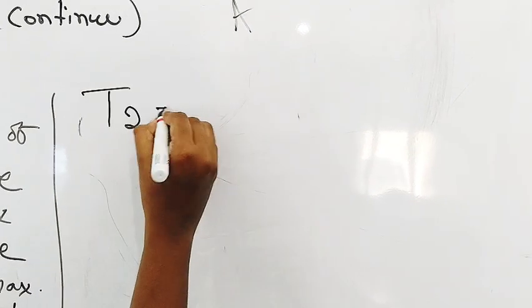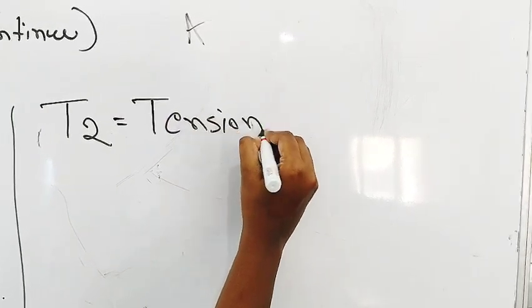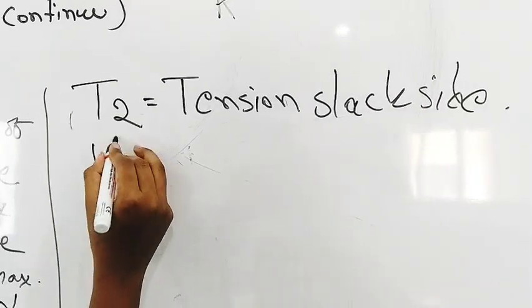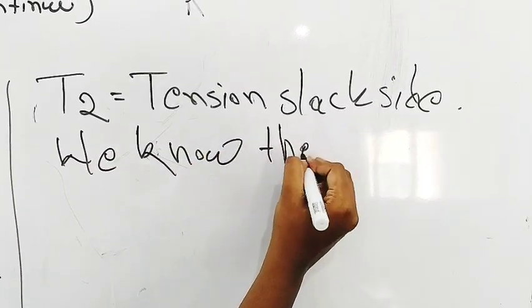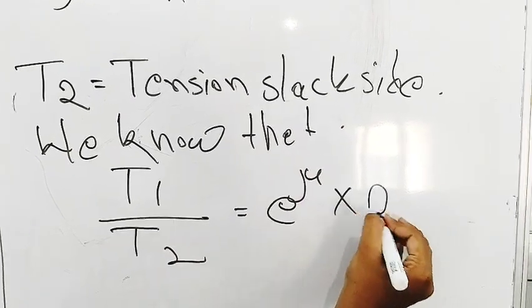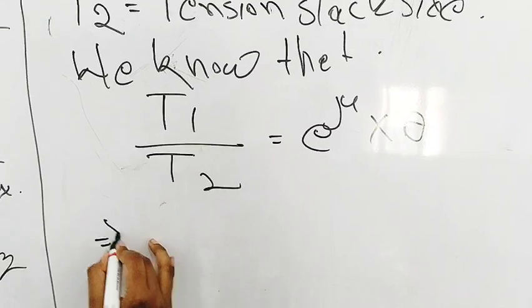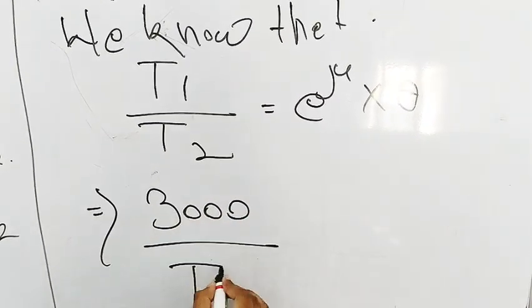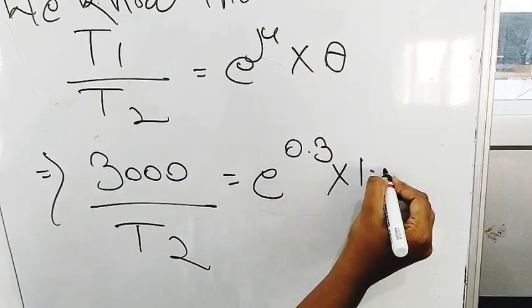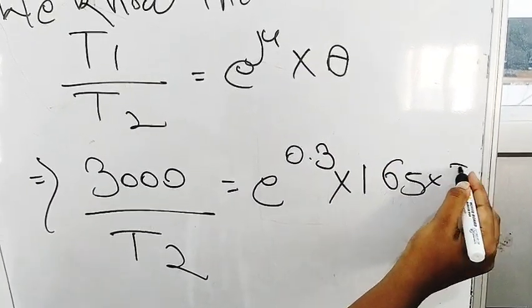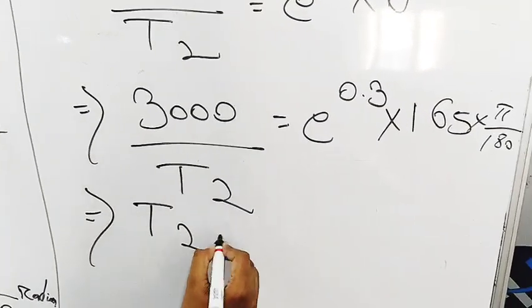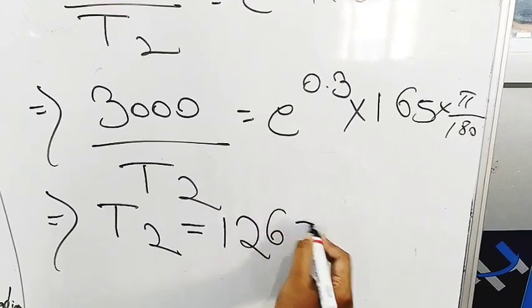Then next one is, then T2 is equal to tension on slack side. So we already know that, we know that T1 divided by T2 is equal to e to the power μ into θ. So T1 is given 3000 divided by T2 is unknown, e to the power 0.3 into 165 into π by 180. So by solving this, the T2 will be 1265 newton.